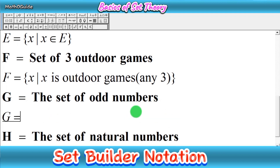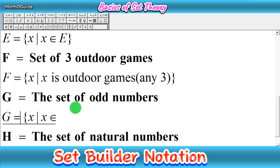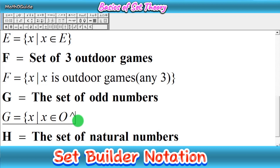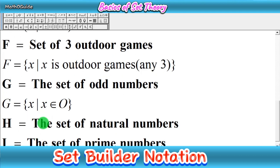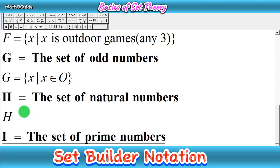Next we have set G, which is equal to the set of odd numbers. Simply write X such that X belongs to the set of odd numbers, noted by capital O. After that, write the symbol 'and', but since there is no limit here, you can skip it and close the bracket. So set G is: X such that X belongs to O — the set of odd numbers.